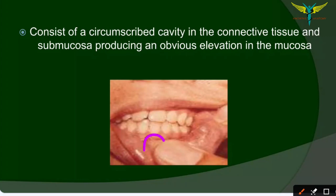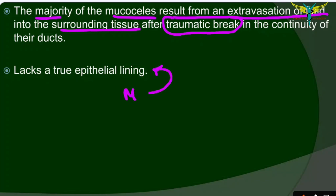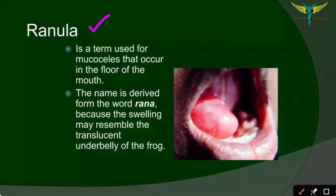A mucocele consists of a circumscribed cavity in the connective tissue and the submucosa that produces elevation in the mucosa. The majority of mucoceles result from extravasation of fluid into the surrounding tissue, most commonly after a traumatic break in the continuity of the ducts. This mucocele lacks a true epithelial lining.